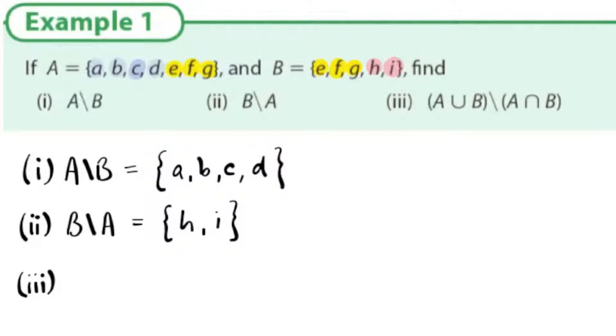The last question, what is A union B not A intersection B? So this means the things not in the intersection. So the things in yellow are not included but everything else is. So the answer to this would be a, b, c, and d and h and i. These are the things that are in A or B excluding the intersection.